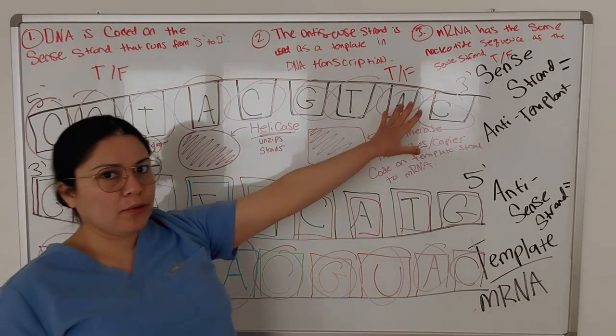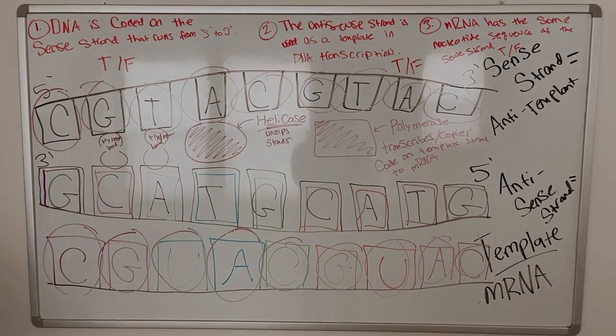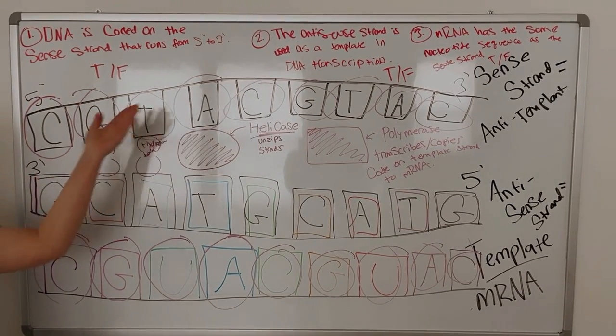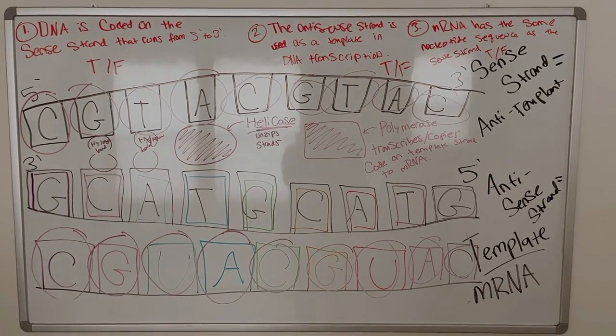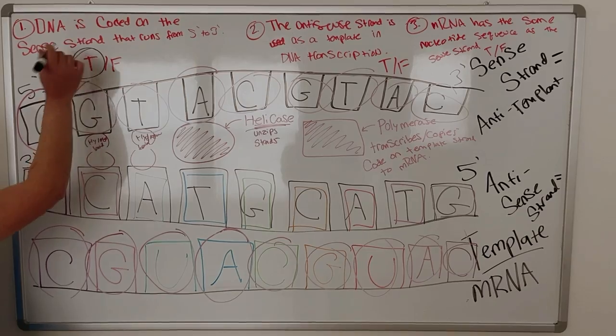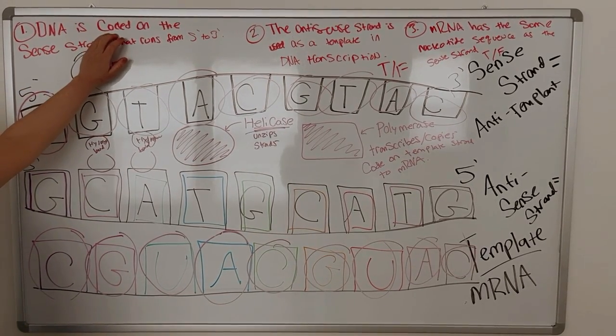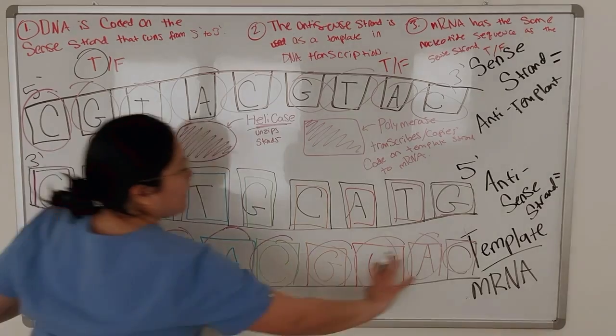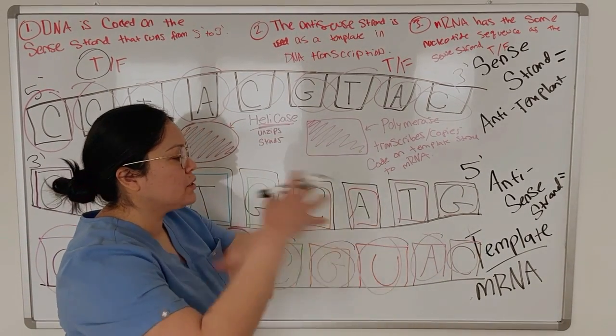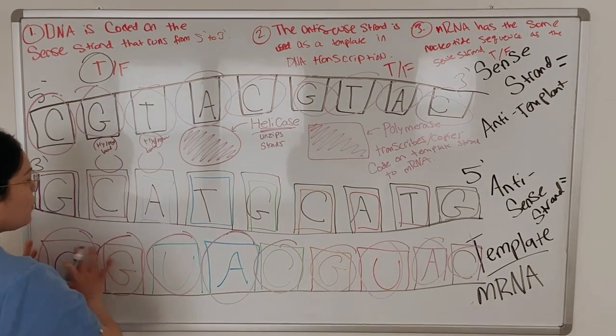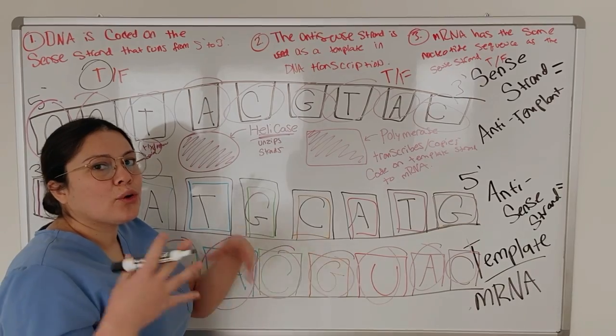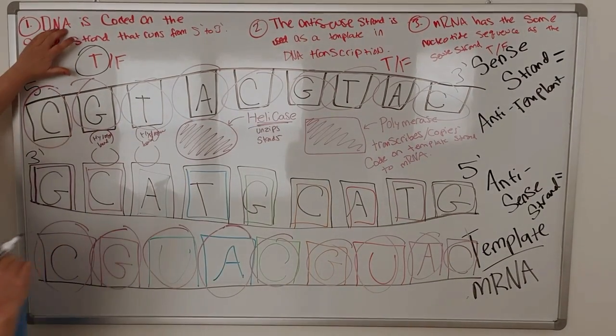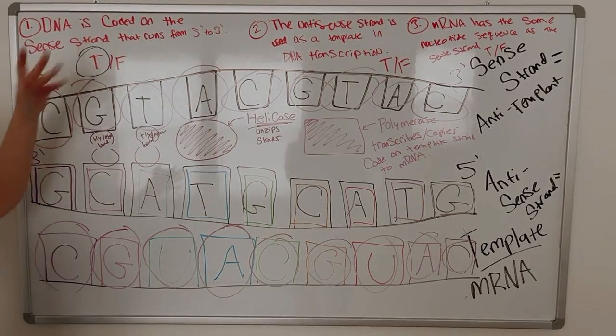So these three questions are all true or false. I got them off of ATI practice questions. So let's go over them one by one. DNA is coded on the sense strand that runs from five prime to three prime. Is this true or false? This is true. So DNA encoding has to be the correct language, the correct encoding for DNA. And this is a copy of this sense strand. So this sense strand is the DNA encoding.